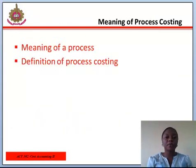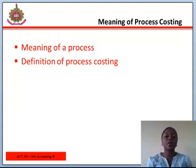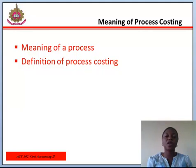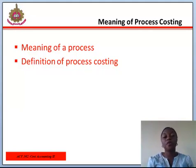Meaning of Process Costing. Before we go into Process Costing, let's look at what a process means. A process can be defined as the subunit of an organization, specifically defined for cost collection purposes. Process Costing is an accounting methodology that traces and accumulates direct costs and allocates indirect costs of a manufacturing process. Costs are assigned to products, usually in a large batch, which might include an entire month's production. Eventually, costs have to be allocated to individual units of a product.